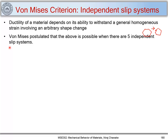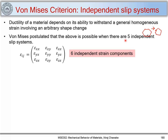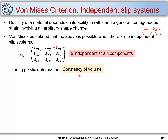Let's understand why the number five has come about. We have a strain tensor with nine components, and out of nine, six are independent strain components. This is because the strain tensor remains symmetric. So there are six independent strain components: ε₁₁, ε₂₂, ε₃₃, ε₁₂, ε₁₃, and ε₂₃. When we consider plastic deformation in a material, we assume constancy of volume — there is no change in volume — and this puts a constraint on the three normal strain components: ε_xx + ε_yy + ε_zz = 0.